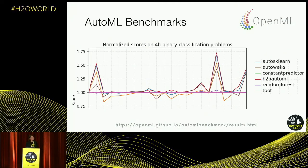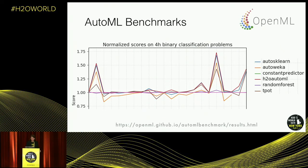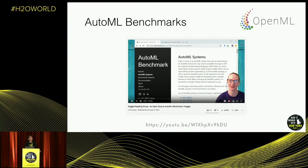I recommend looking at the benchmark results comprehensively rather than focusing on one single result, because performance varies quite a lot depending on environmental changes: small system vs. big system, small data vs. big data, short vs. long time limits. Narrow down to the results relevant to your use case — are you looking to train 100 models a day quickly, or do you have a week to train? There's also a video from the Kaggle reading group YouTube playlist where Rachel from Kaggle reviewed our paper, so you can just watch and have it read to you.